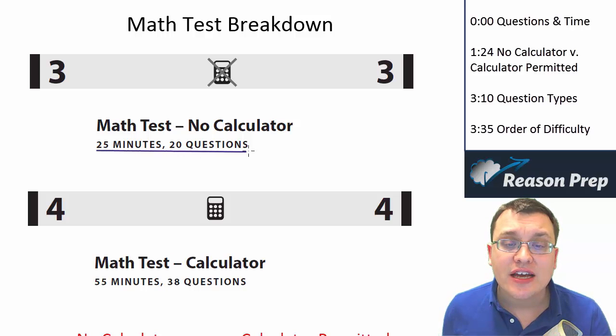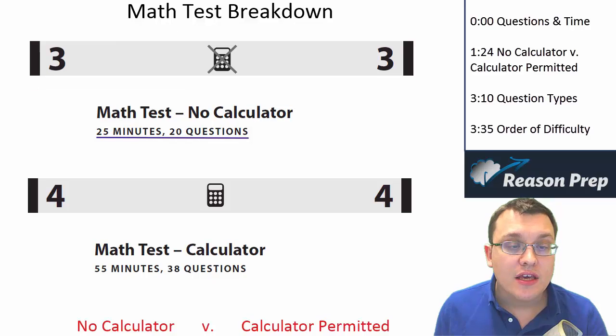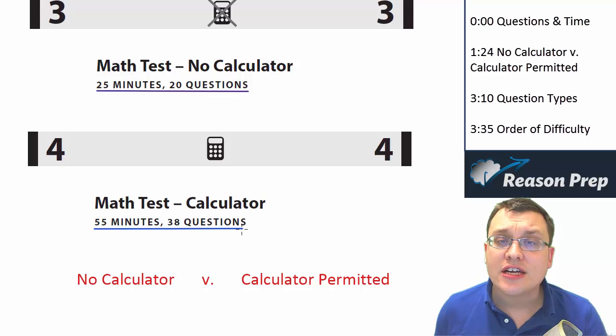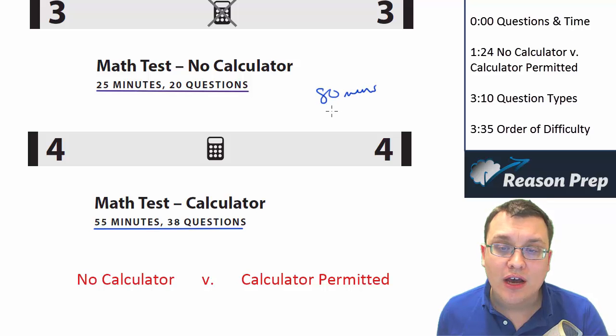In this section you cannot use your calculator. In the next test, the next section, section four, you've got 55 minutes and 38 questions, and in this section you can use your calculator. So the total time is 80 minutes and you've got 58 questions.